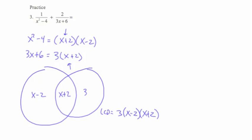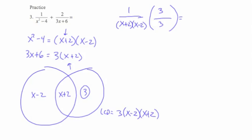We usually write the coefficient 3 first. Now I need to take my original fractions and build these into like fractions. My original fraction 1 over (x squared minus 4): I'm going to factor that bottom as (x plus 2)(x minus 2), and multiply by my missing multiplier. The only factor missing from that circle was 3. So in the numerator I get 3 times 1 = 3, and in the denominator I leave it factored: 3 times (x plus 2) times (x minus 2).